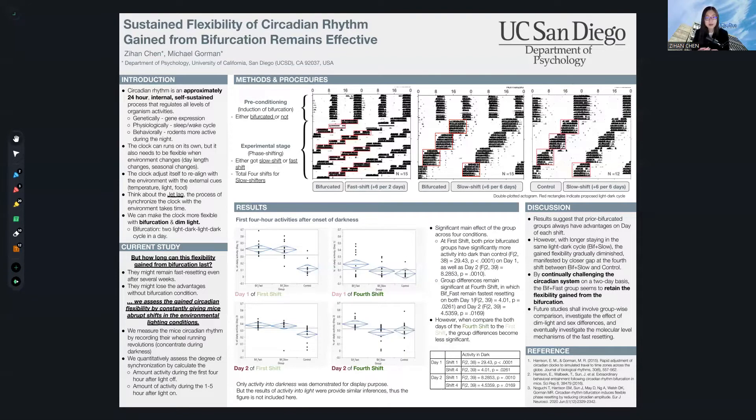My current study asks the question: if we can make the clock more flexible, how long can this gained flexibility from bifurcation last? It might last for weeks or it might just disappear immediately after bifurcation ends.